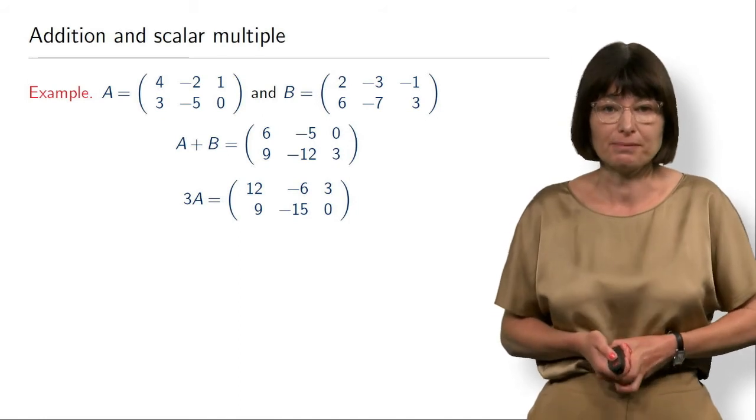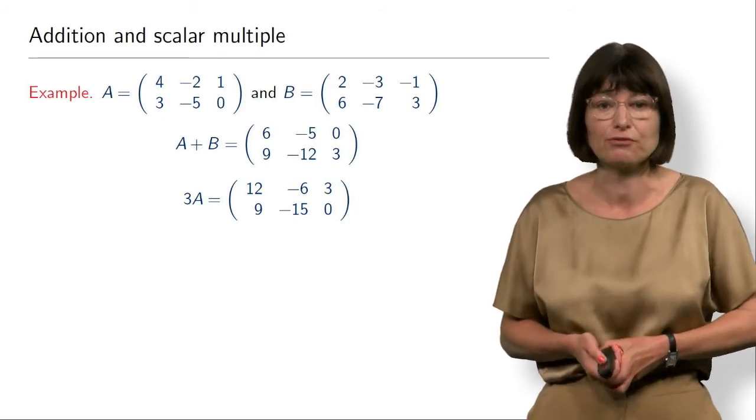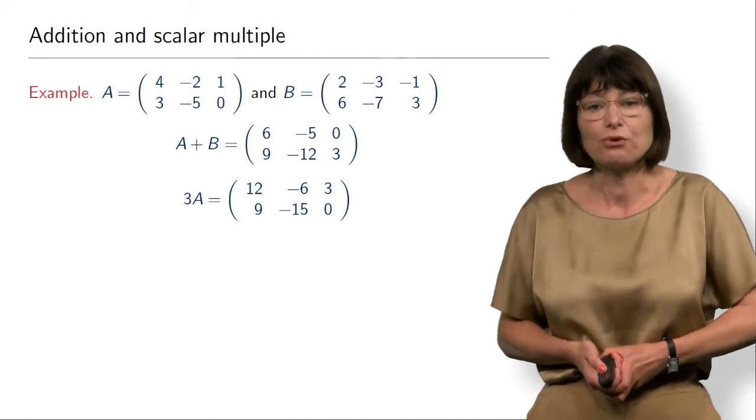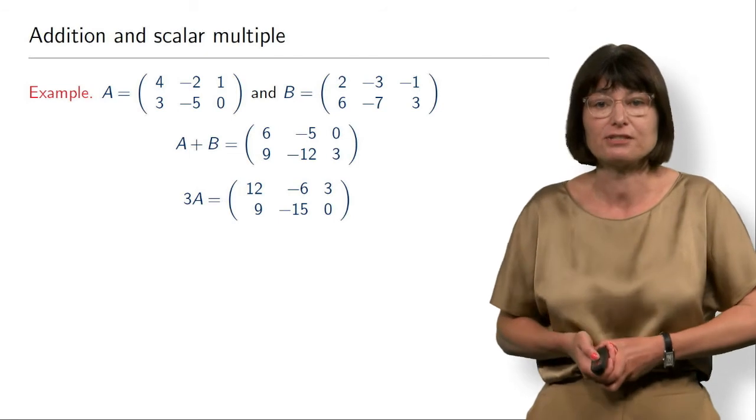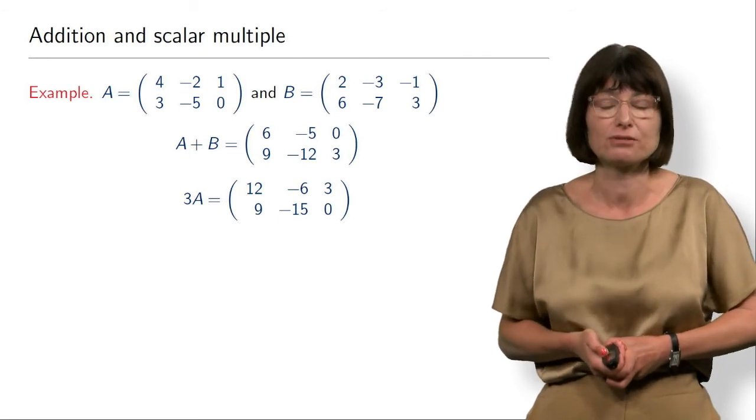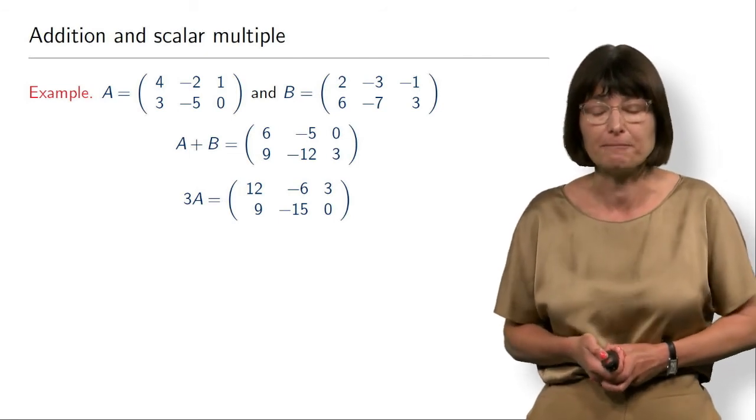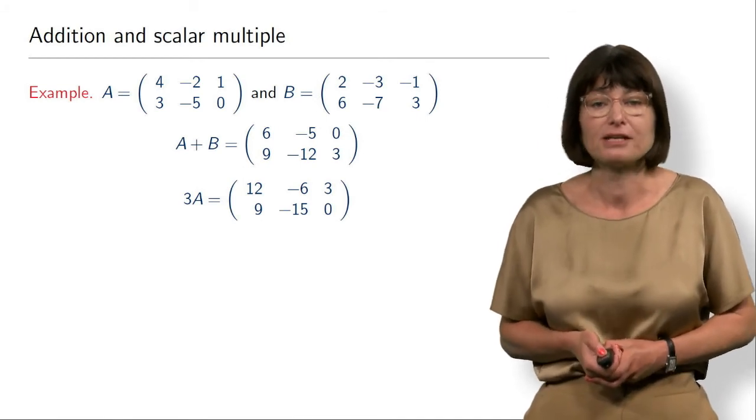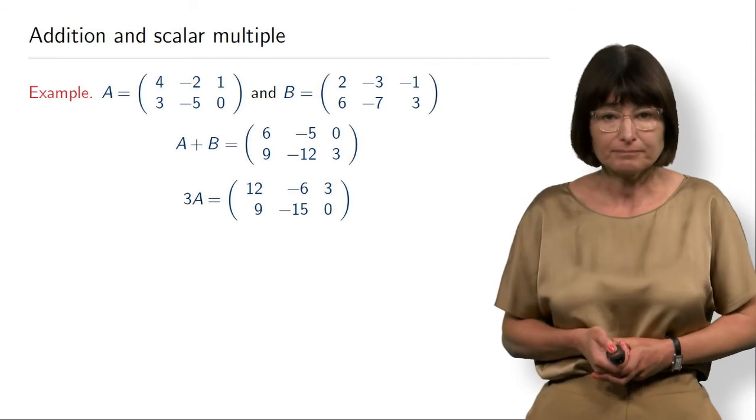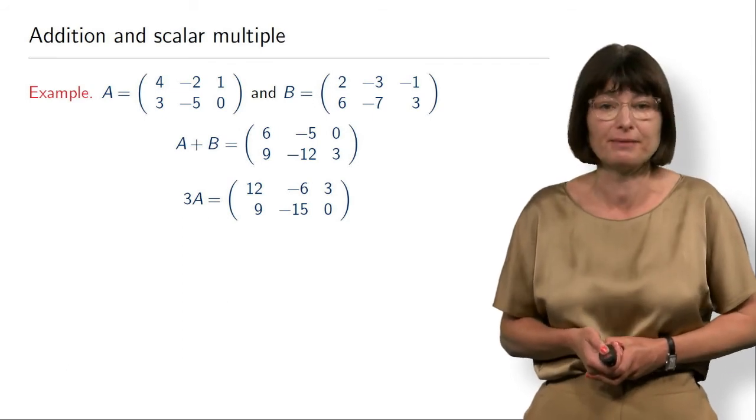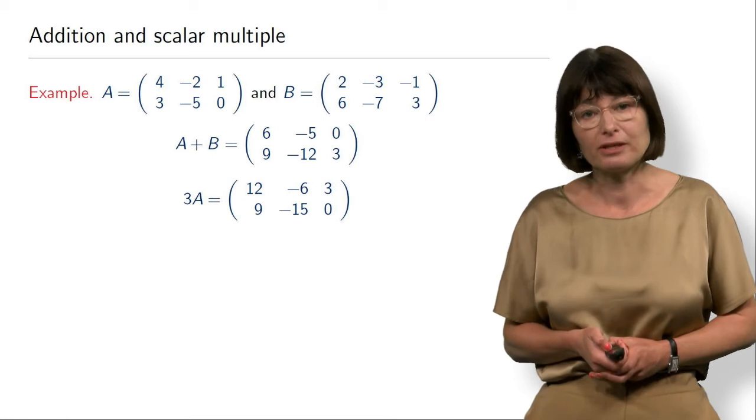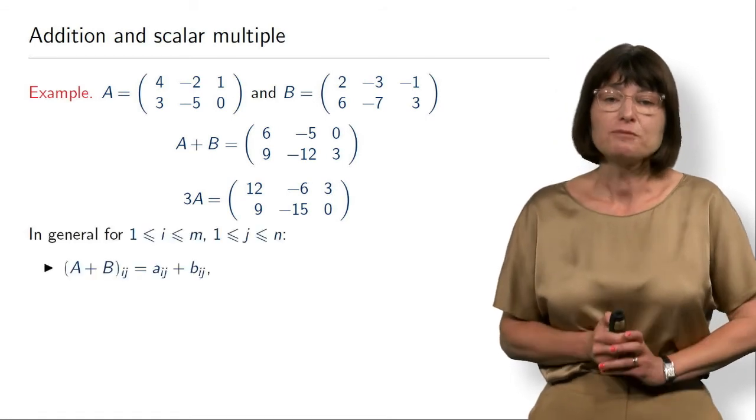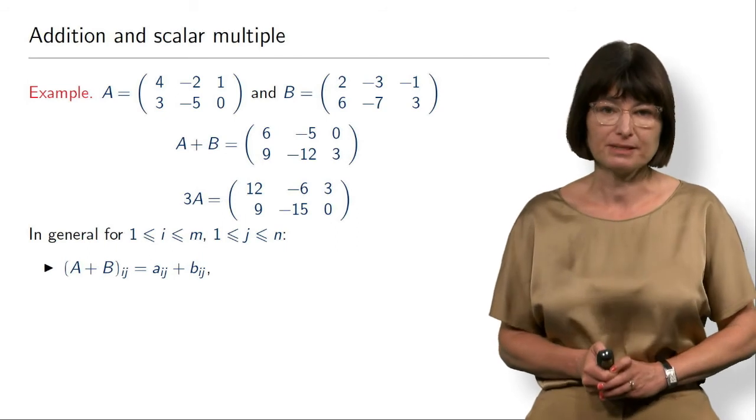In this example, A plus B: you can see six is four plus two, and minus five is minus two plus minus three. So for each element ij, we just add the corresponding elements of matrices A and B. And if you want to multiply by a number, we multiply each element of the matrix by this number. For example, if we multiply matrix A by three, then all elements are multiplied by three.